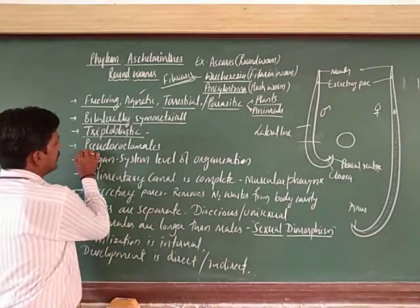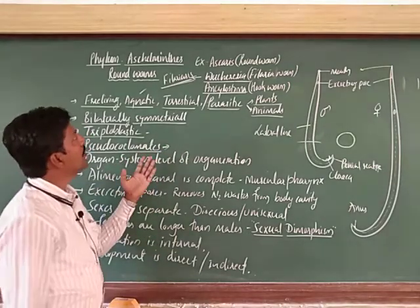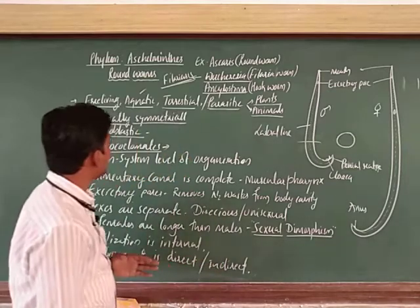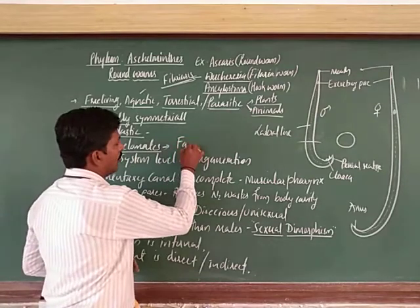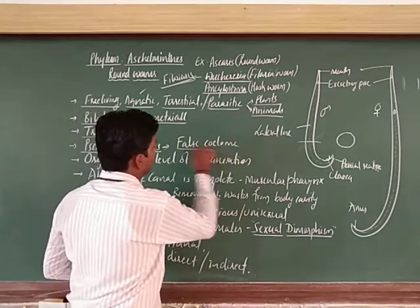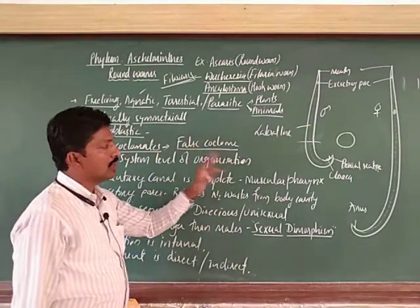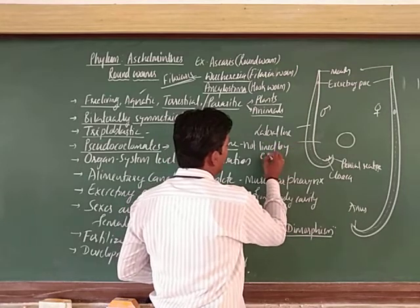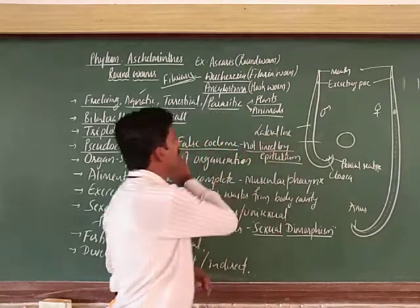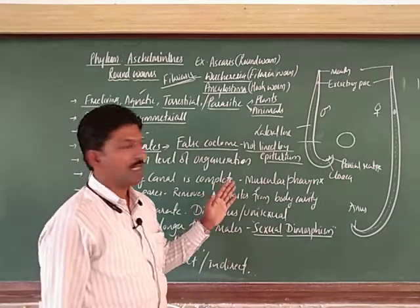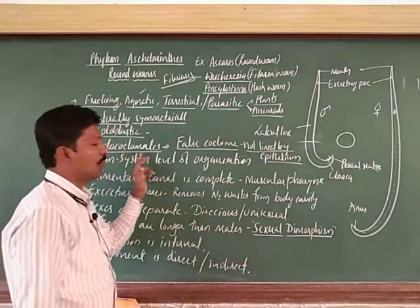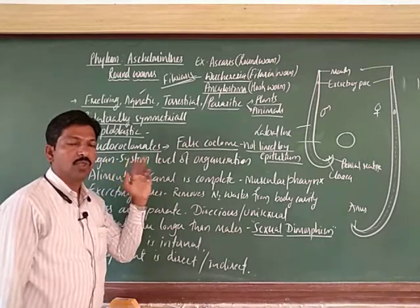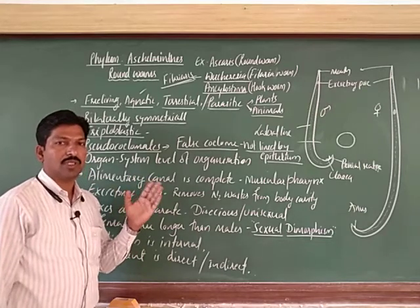Next, they are pseudocoelomates. The previous phylum we studied, Platyhelminthes, was acoelomate because coelom was absent. In these members, we observe a pseudocoelom — that is a false coelom. The coelom is present, but it is not lined by epithelium. Since the body cavity is not lined by epithelium, we call it a false coelom, and the animals are called pseudocoelomates.